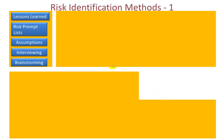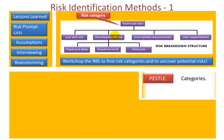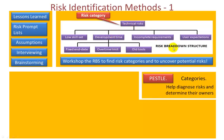Risk identification methods include: lessons learned — taking risks from similar projects; risk prompt lists which may be in-house; assumptions, since any assumption is potentially a risk; interviewing key staff with relevant experience; and brainstorming. A very good technique is to consider using a risk breakdown structure. Here I've used technical risks as one of many categories — you could develop a breakdown structure for a particular project to identify areas where risks may occur, then enter them into the risk register and determine appropriate responses.